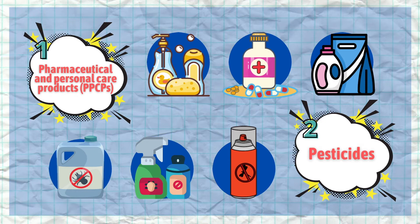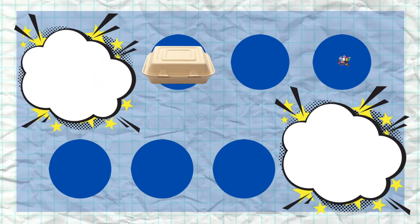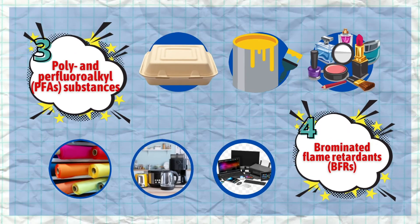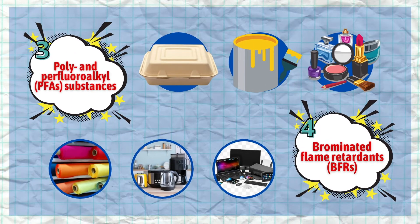Next is pesticides, which include herbicides, insecticides, or any other chemical substances normally used to get rid of pests. The third classification of CEC is PFAS substances, which can be mostly found in food packaging, paints, as well as in most cosmetic products.